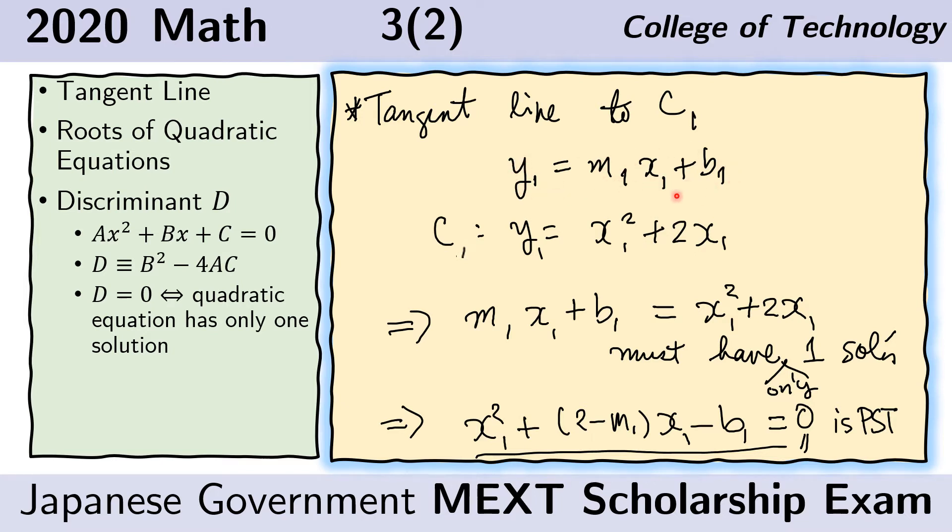For the first equation here, this is the value of y and so we put that here. For the second equation, this is the value of y and so we put that here. We rearrange this equation to give us this standard quadratic form. Then we recall that because this is the tangent line to C sub 1, then there must only be one point of tangency. That means that there could only be one value of x for this equation here, and so we will use that fact later.